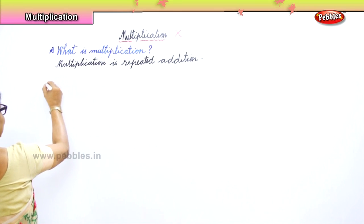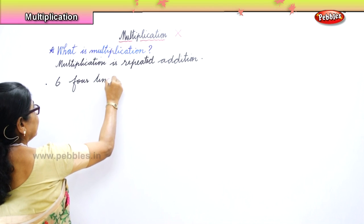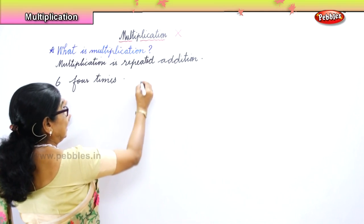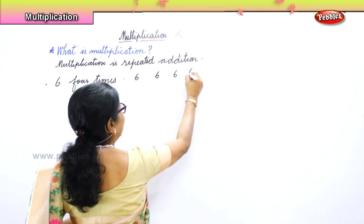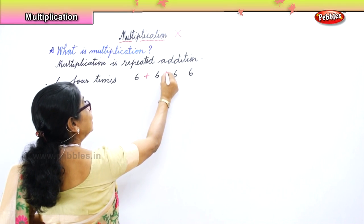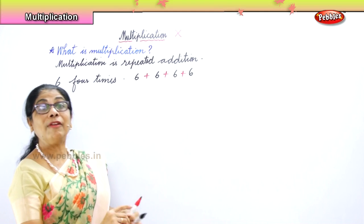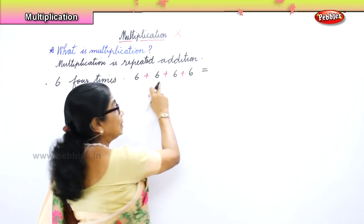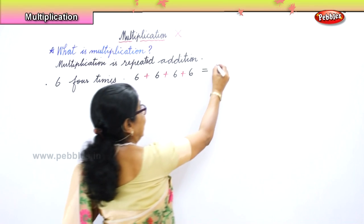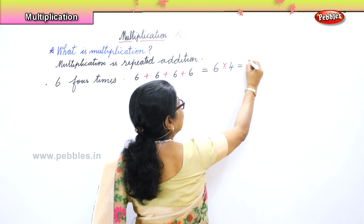Now, if I say six, four times. When I say six four times, that is six, one, two, three, four — four times. What do you do? Repeated addition. Six four times is six plus six plus six plus six. Six plus six is twelve, and twelve plus twelve is twenty-four. The table says: six fours are twenty-four.